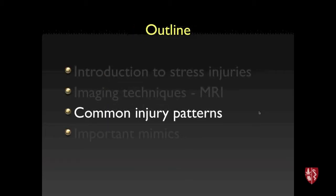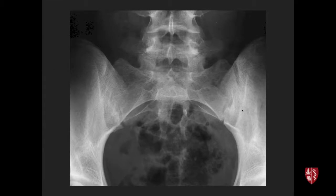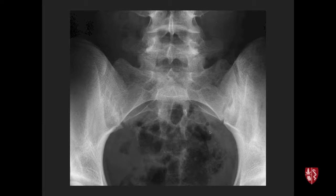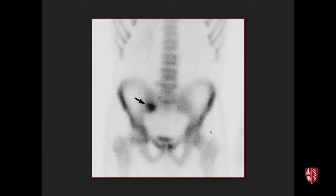Starting with the pelvis: a radiograph in a young patient with right sacroiliac pain may appear normal or show only subtle sclerosis, making the diagnosis impossible on plain film. A bone scan in a 22-year-old running athlete showed increased activity in the right sacroiliac region and left pubic symphysis, compatible with stress injury, though it cannot confirm a fracture line — a key limitation of bone scan.